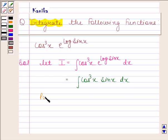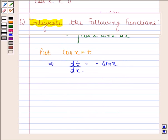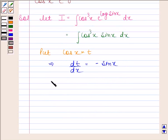We will put cos x = t. Now, cos x = t implies dt/dx = -sin x. This implies dt = -sin x dx.